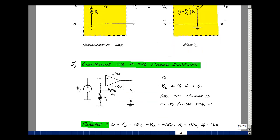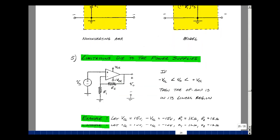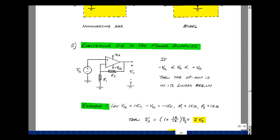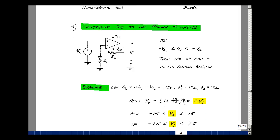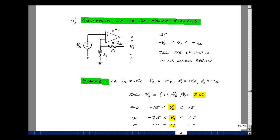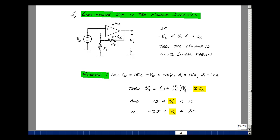Let's take a look at the limitations due to the fact that we have a power supply. Back when we introduced the op-amp, we said that the output voltage can swing anywhere between plus and minus the power supplies. Suppose I have a plus and minus 15-volt power supply, and then I have two resistors, R1 and R2, that are both 1k. Then the output voltage would be 1 plus R2 over R1 times V-sub-S, and that would be twice V-sub-S.